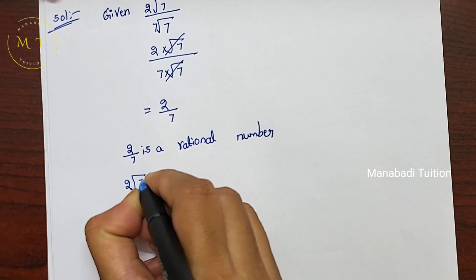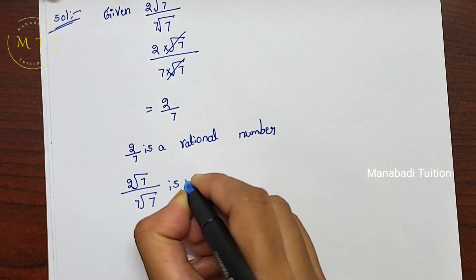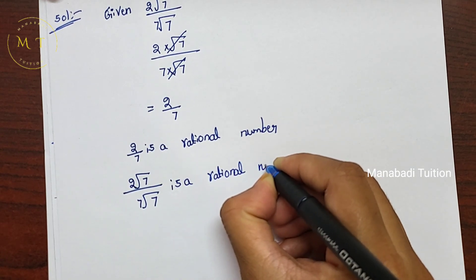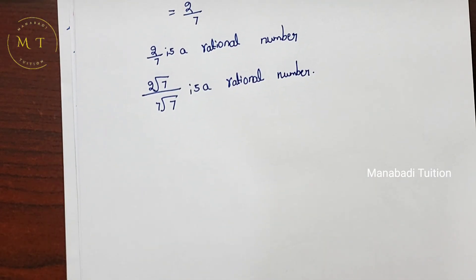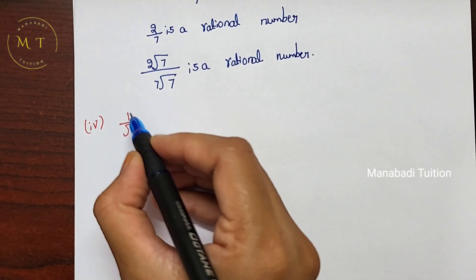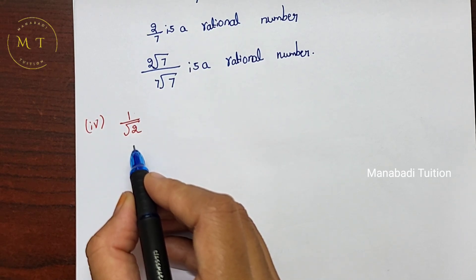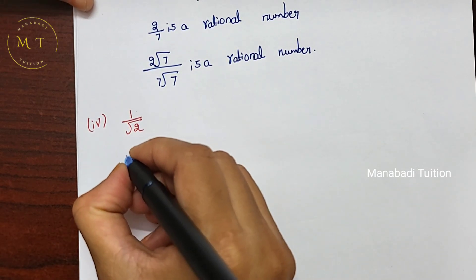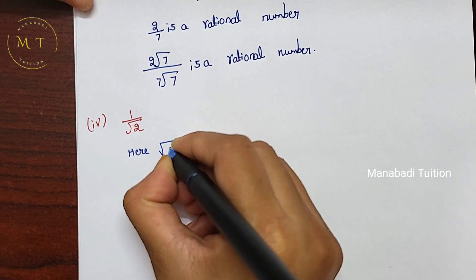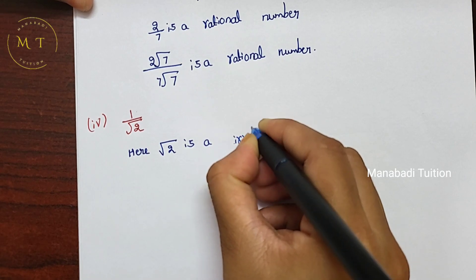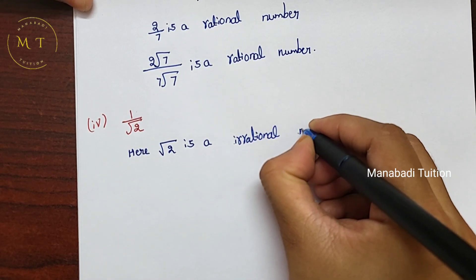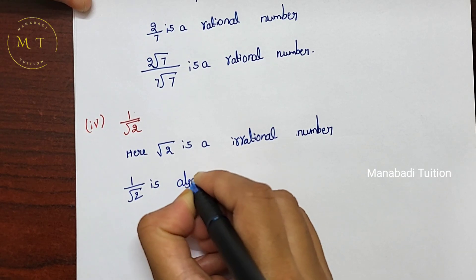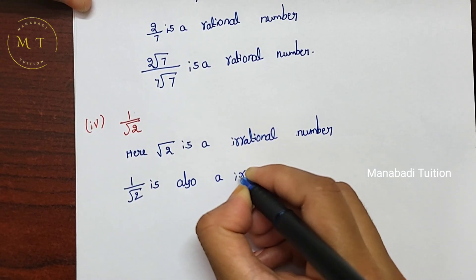Therefore, 2 into root 7 by 7 root 7 is a Rational number. Next, fourth one: 1 by root 2. Here 1 is a Rational number and root 2 is an Irrational number.